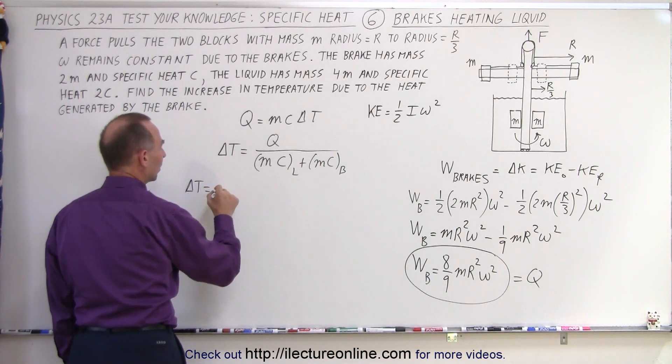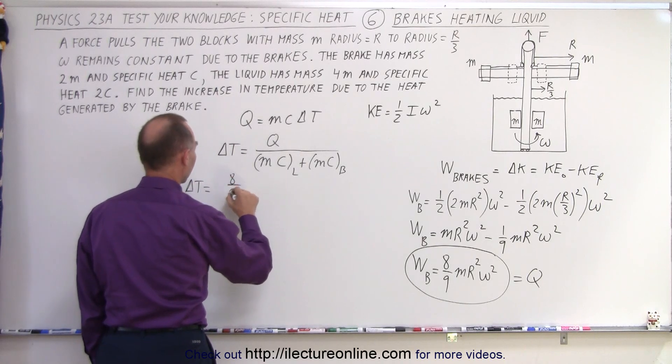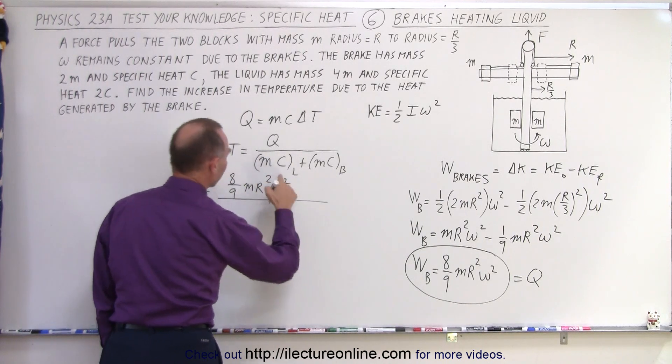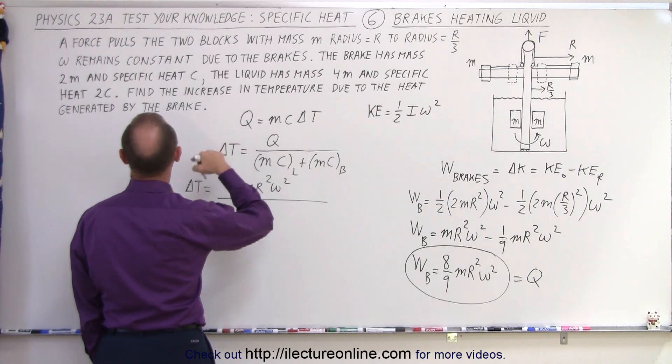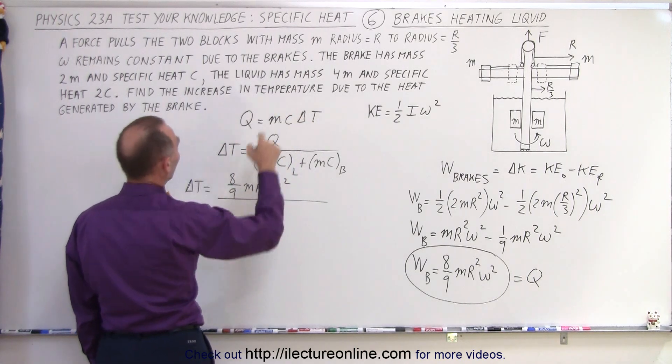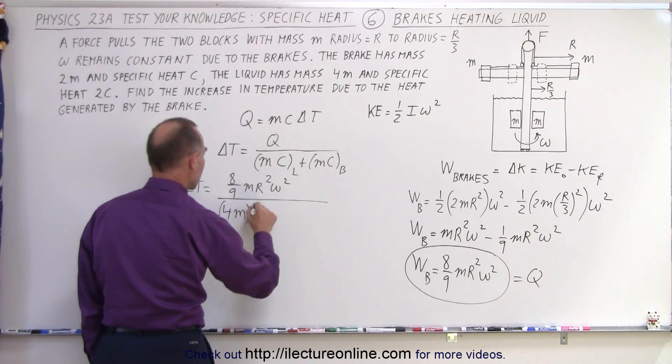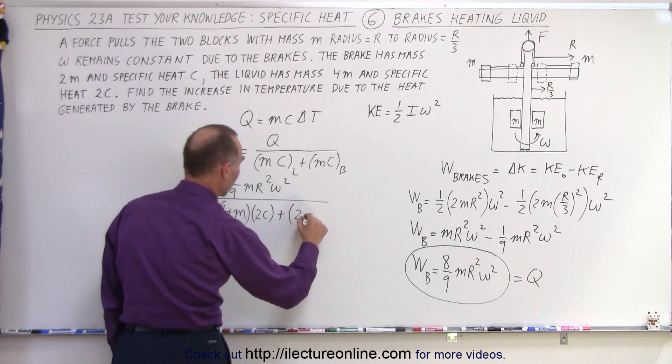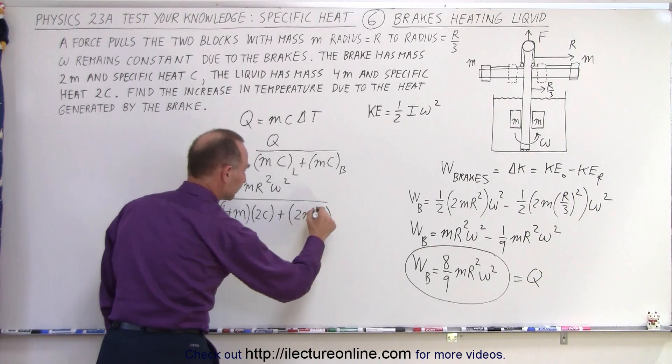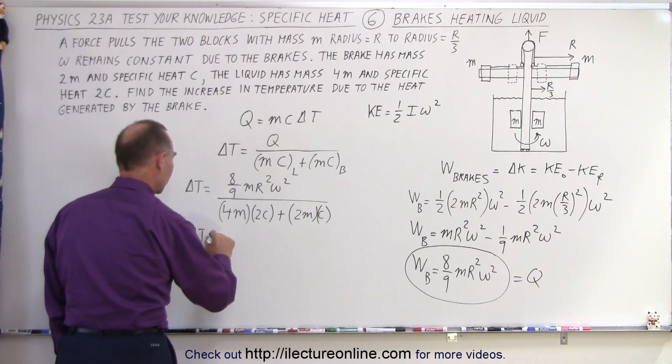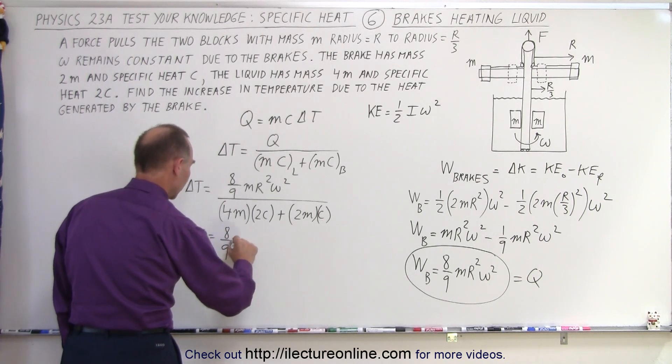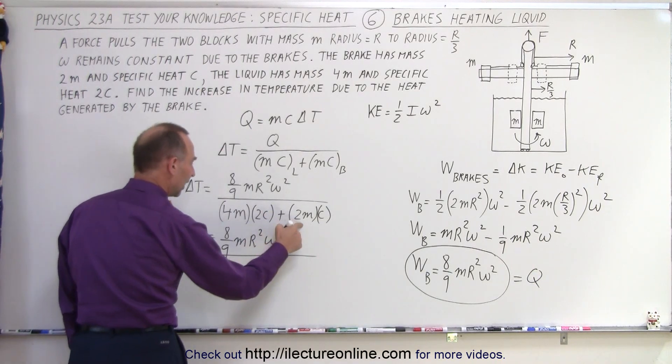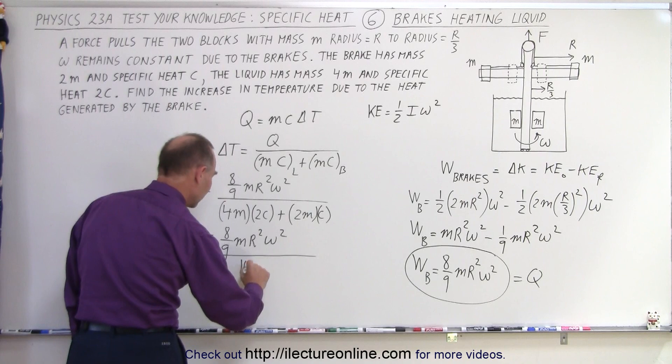So the change in the temperature is equal to Q, which is 8 ninths, MR squared omega squared divided by the mass and the specific heat of the liquid. The mass of the liquid is, let's see, 4M. And the specific heat is equal to 2C. Plus the mass of the brakes, which is 2M. And the specific heat is C. Like that. Okay, so delta T is equal to 8 ninths MR squared omega squared divided by 8 plus 10, 8 plus 2, which is 10MC.